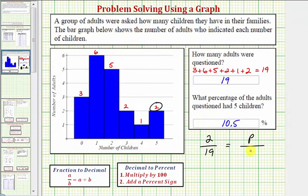So this number here P compared to one hundred would be the percent of adults that responded they had five children. So to solve this proportion, we would cross multiply and solve for P.